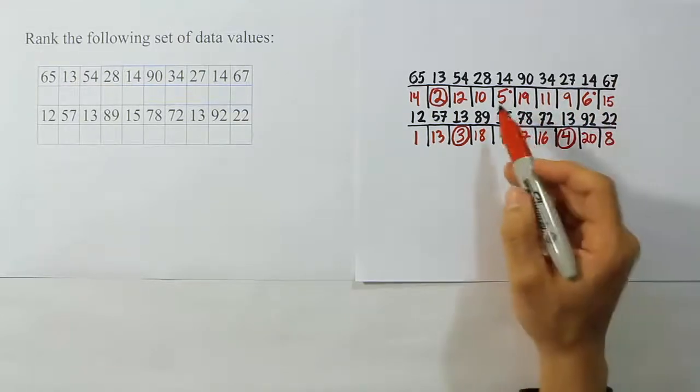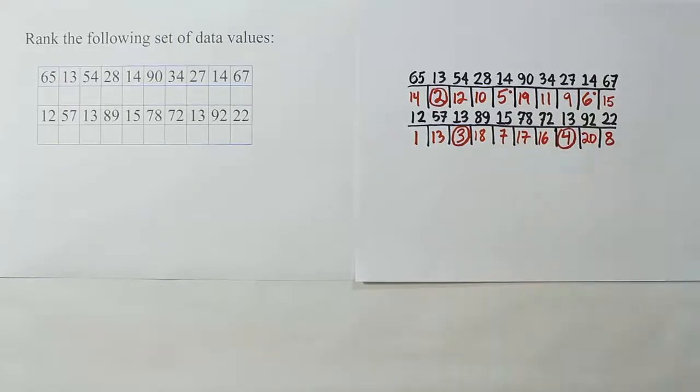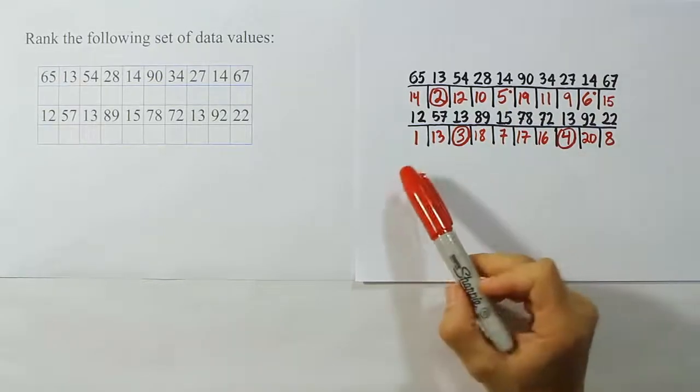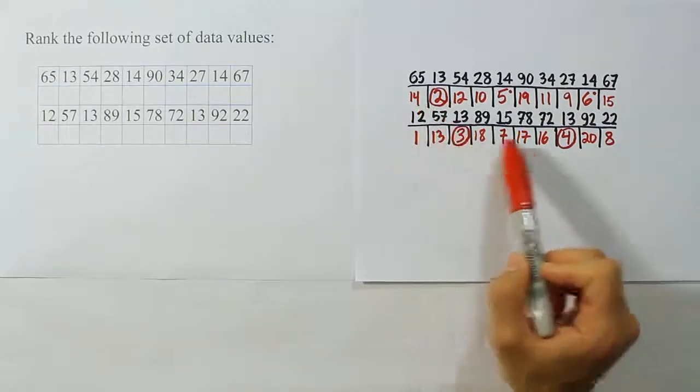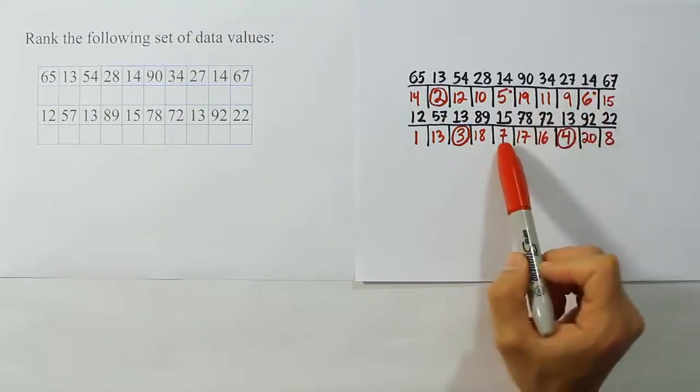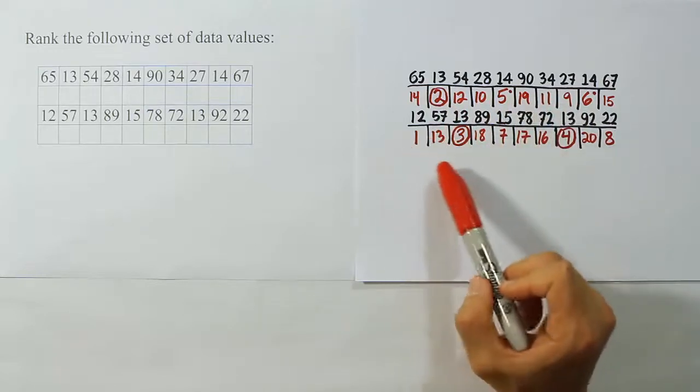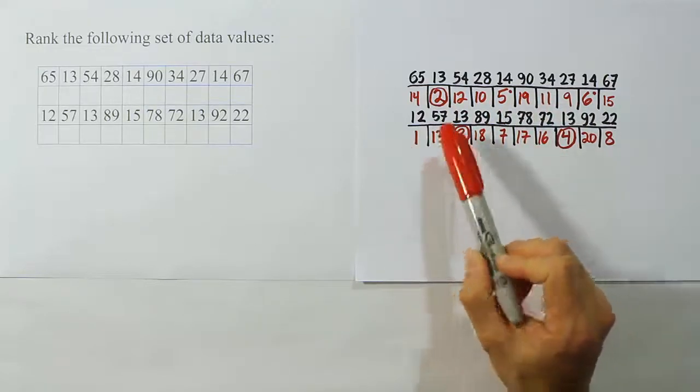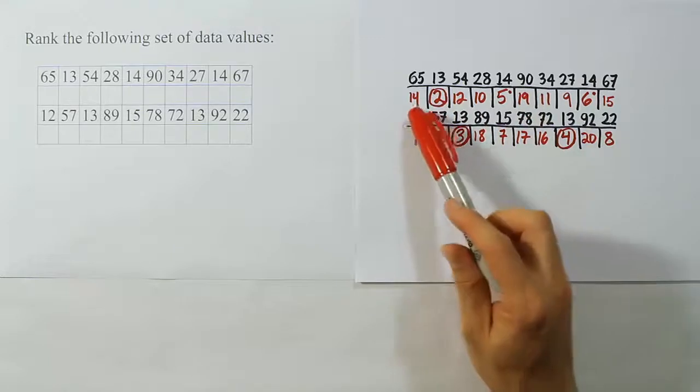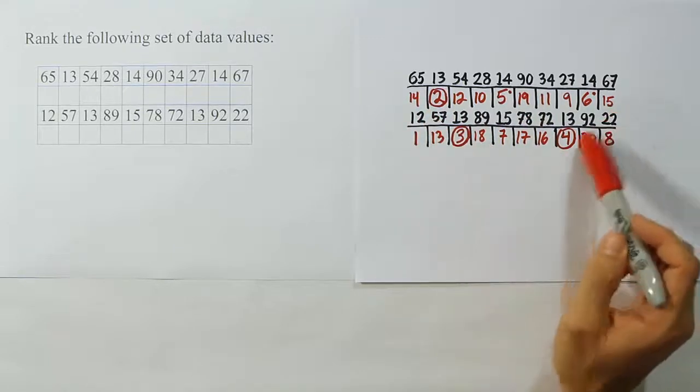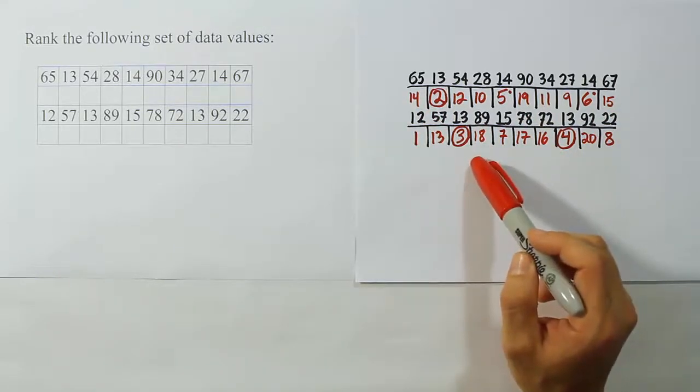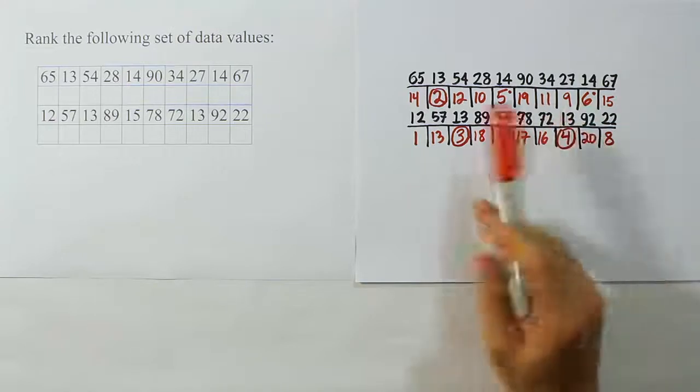So there are no other ties except for the ones I have circled there. And now you can check and make sure you've given out all the ranks. 1, 2, 3, 4, 5, 6, 7, 8, 9, 10, 11, 12, 13, 14, 15, 16, 17, 18, 19, 20.